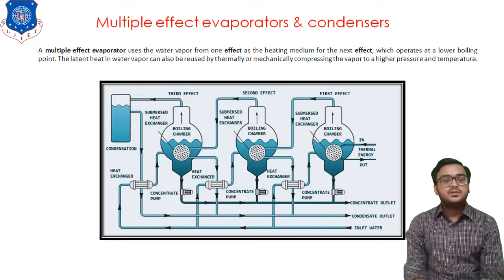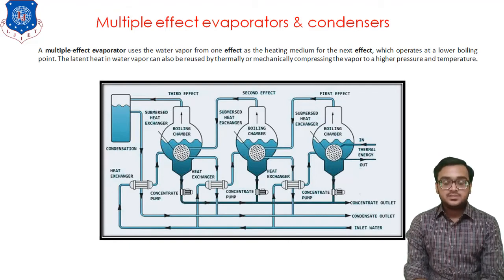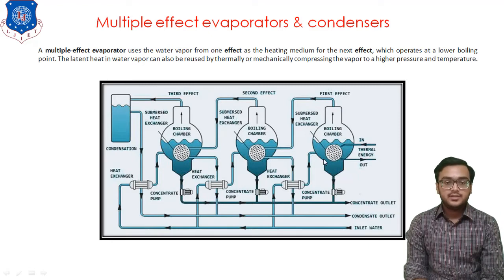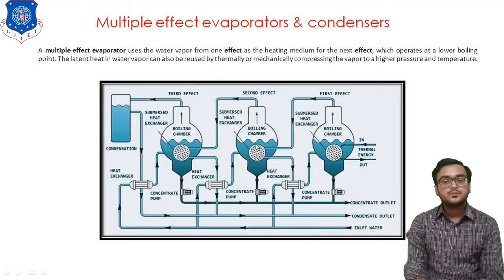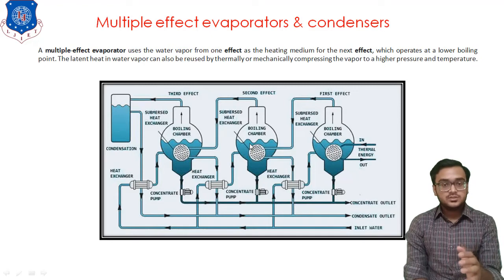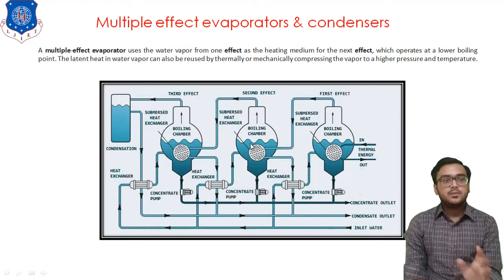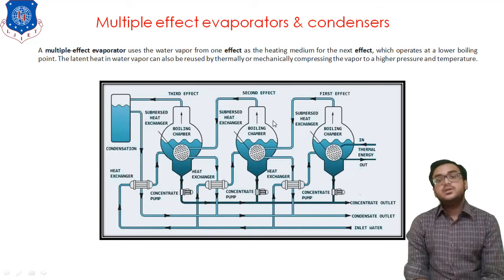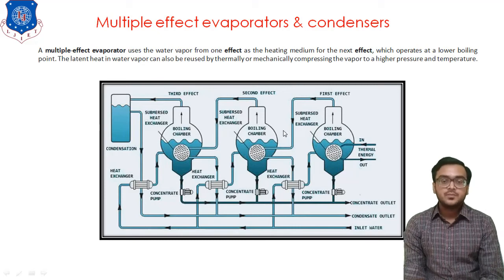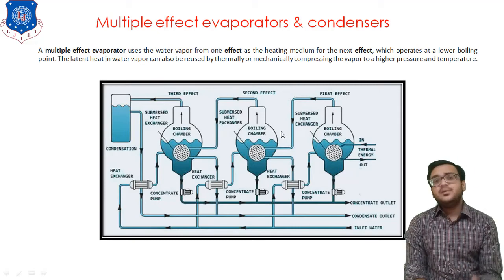In this structure, the main heat energy is supplied only to the first evaporator, while the remaining two evaporators use the output generated from the previous stage. This kind of treatment is quite useful for thermal economy. This process is particularly used in distillation plants where heat content requirement varies across different locations. It is also widely used in the milk industry for generating products like milk, cheese, and ice cream.